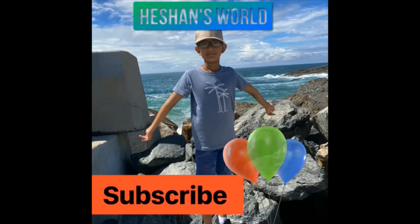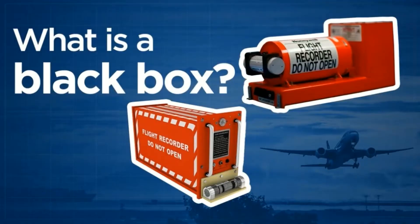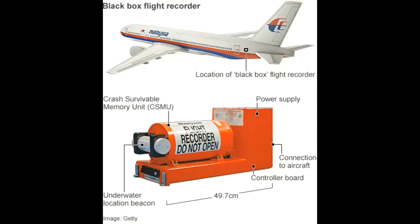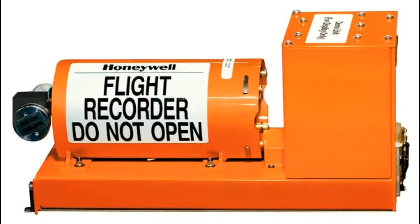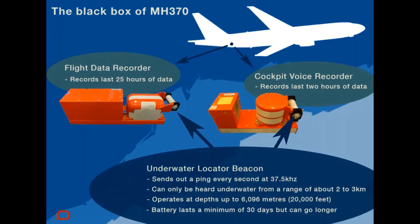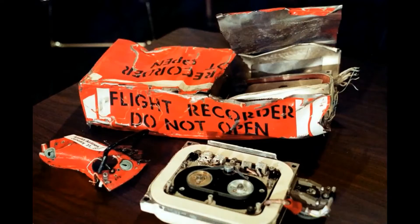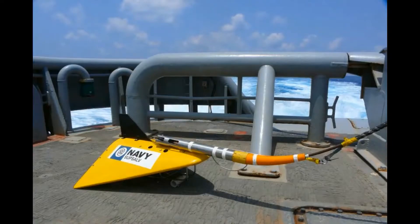Hi friends, today I'm going to talk about black boxes. Every commercial aircraft must contain two flight recorders known as black boxes. The first is a flight data recorder.